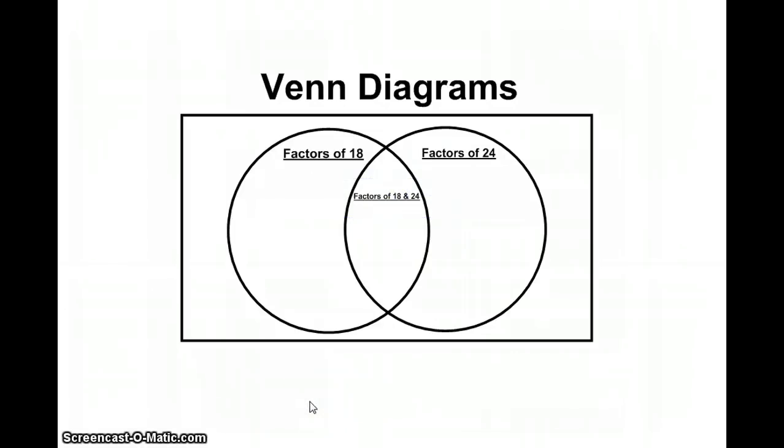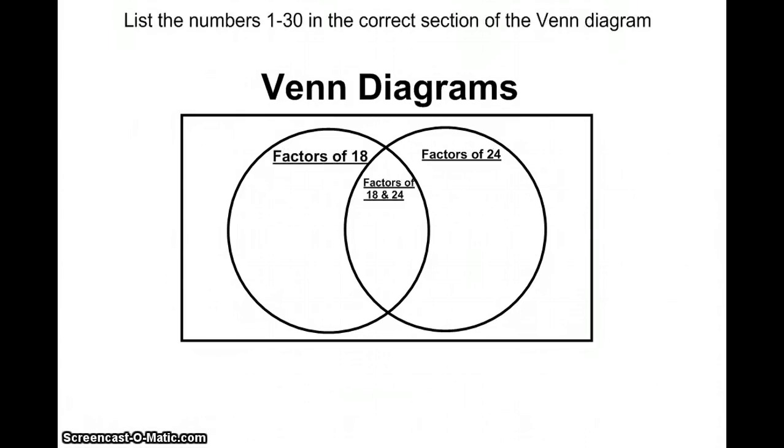So now let's go ahead and use the Venn diagram with some numbers. If I were to give you a Venn diagram as a classwork or homework problem, the directions would say something like this: list the numbers 1 through 30 in the correct section of the Venn diagram.